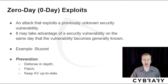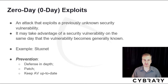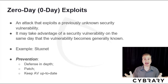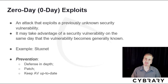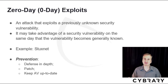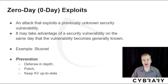A zero-day exploit is an attack against a previously unknown security vulnerability. It may take advantage of a vulnerability on the same day it becomes generally known — zero-day because there's zero time to get the vulnerability fixed before it's announced. The best-known example is Stuxnet, the worm that took out nuclear generators. Prevention includes defense in depth, staying up-to-date on patches, and keeping your antivirus up-to-date.